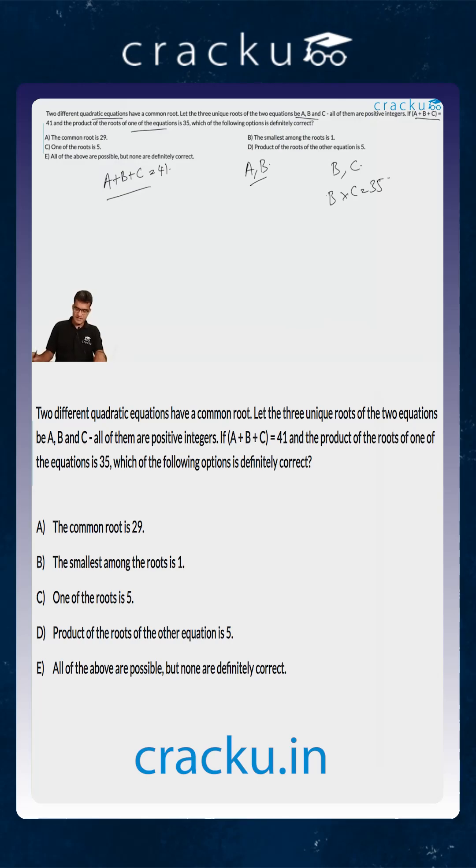Since all roots are positive integers, the only two ways to express 35 as a product of two natural numbers are 1 times 35 or 5 times 7. These are the only two ways to express 35 as a product of two positive integers.